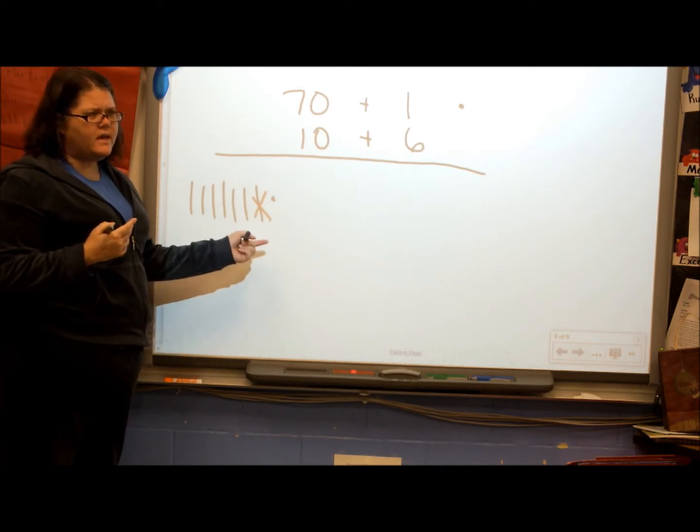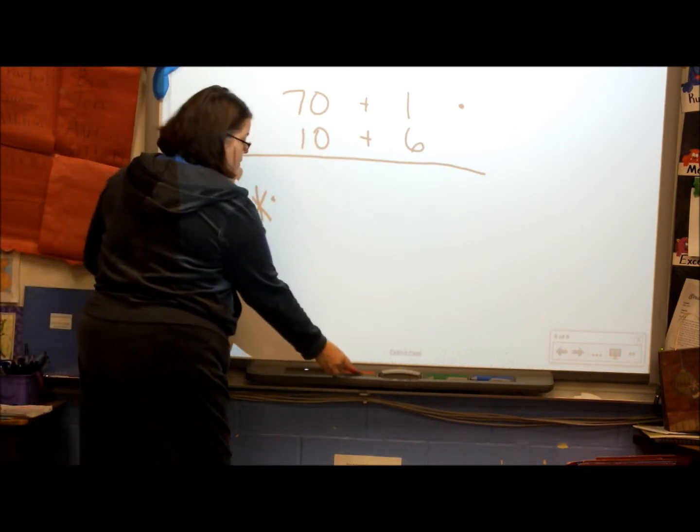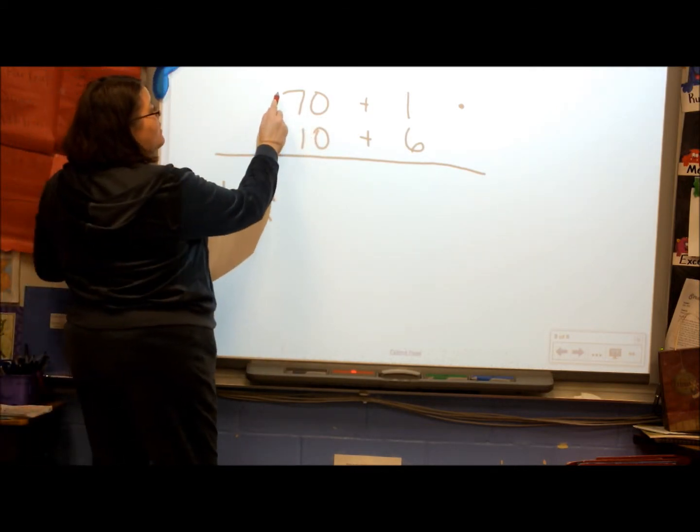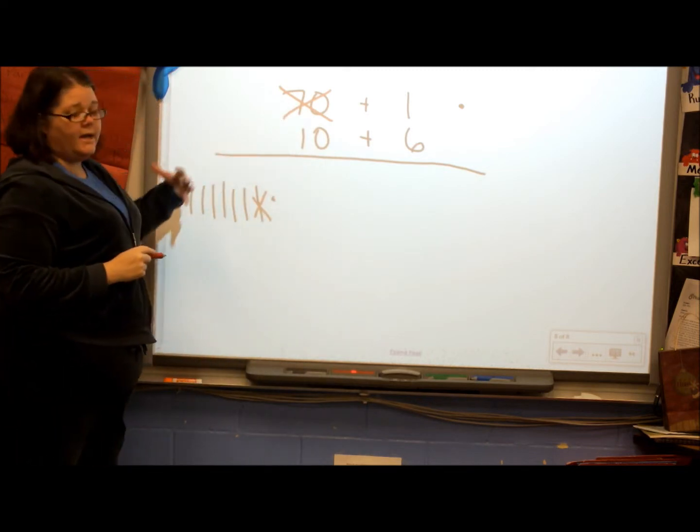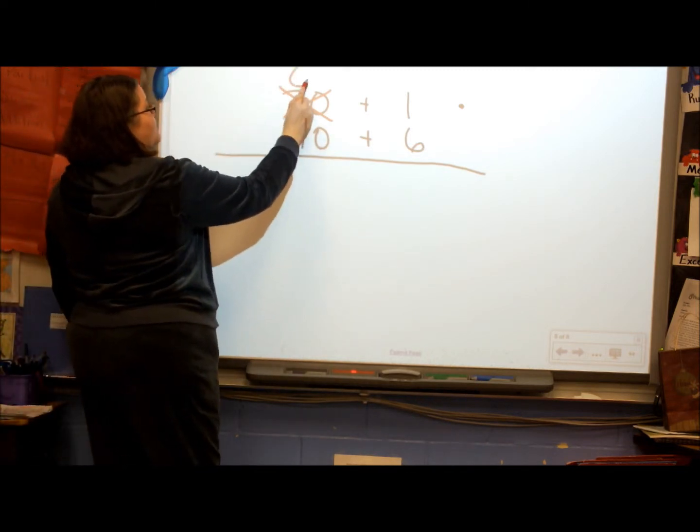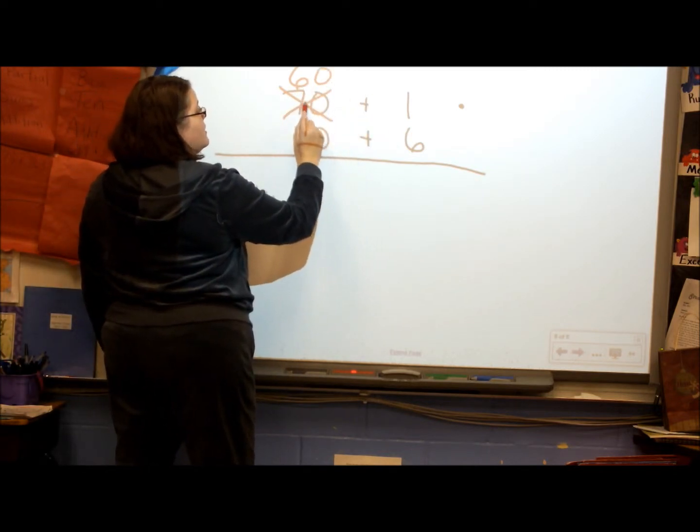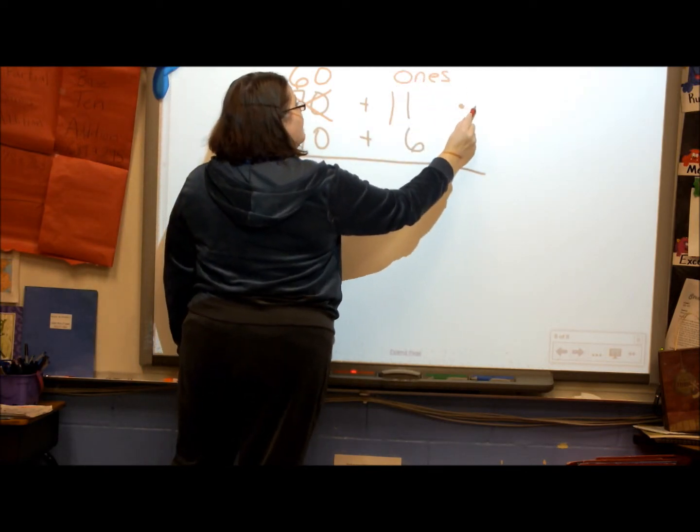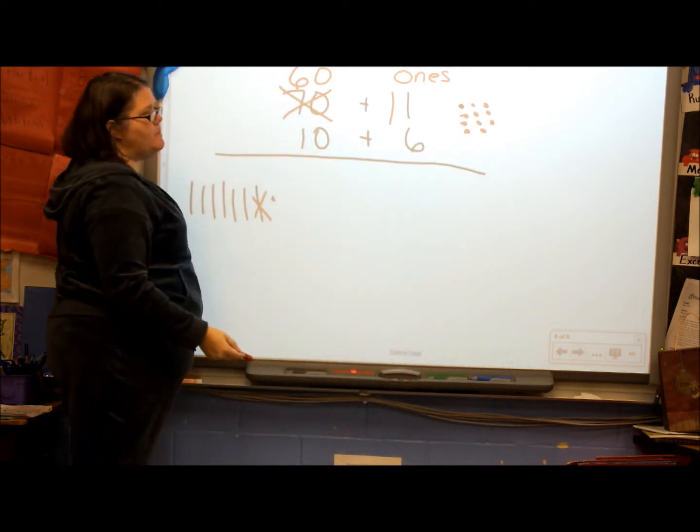So, this up here is what's going to change. We have to take away a 10. If I take a 10 away from 70, what would my answer be? 60. Now, I'm going to move that 1 that we took away over into the ones column, and I'm going to have 11 ones. I have 10 reds and 1 black.